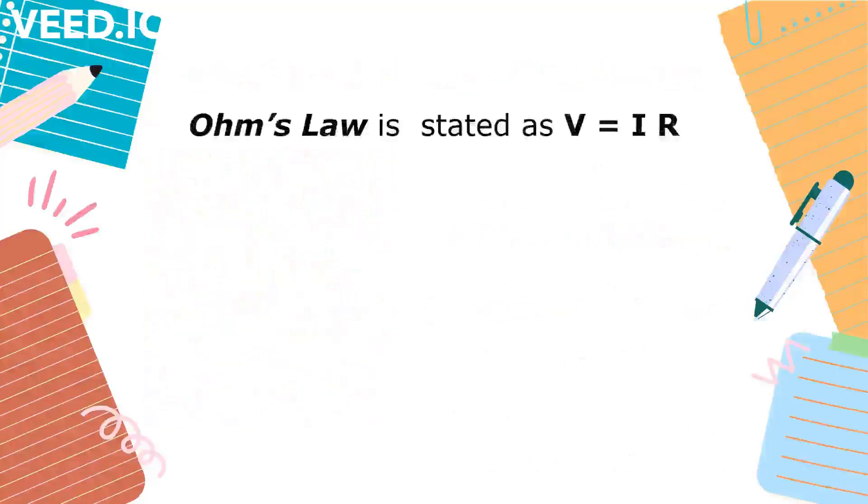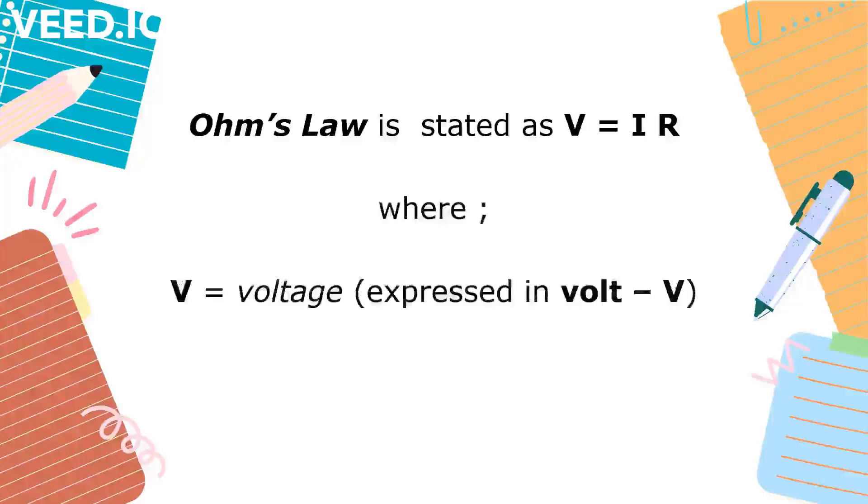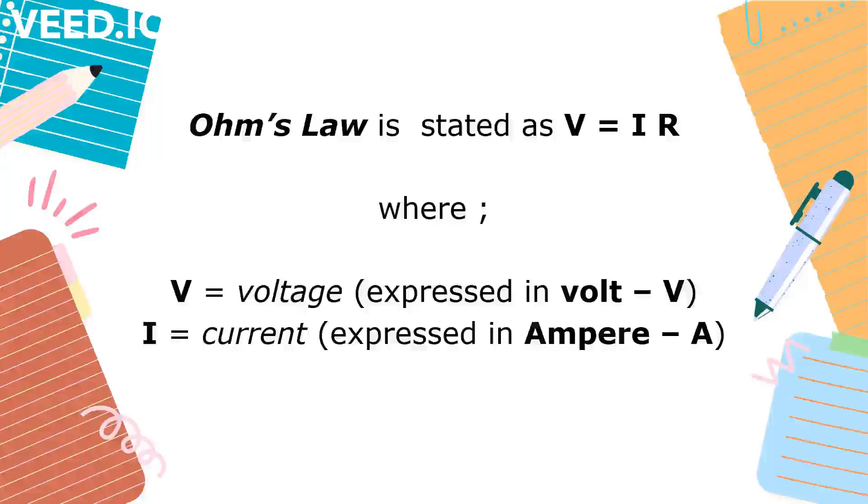Ohm's law is stated as V equals I times R, where voltage, represented by capital letter V, is expressed in volt, while current, represented by capital letter I, is expressed in ampere. Resistance, represented by capital R, is expressed in ohm, or Greek letter omega.